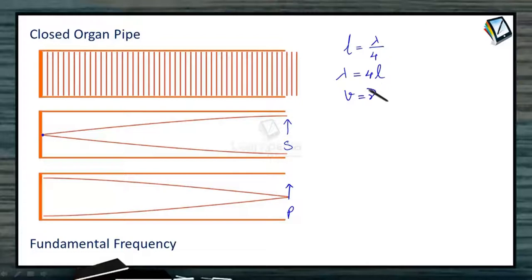Since V is equal to nu into lambda, so fundamental frequency in the closed organ pipe is V by lambda, which is V by 4L. So, fundamental frequency in case of closed organ pipe is V by 4L or 1 by 2L under root B divided by rho.